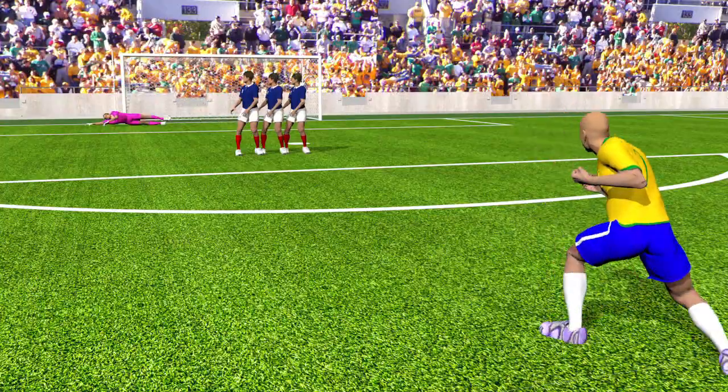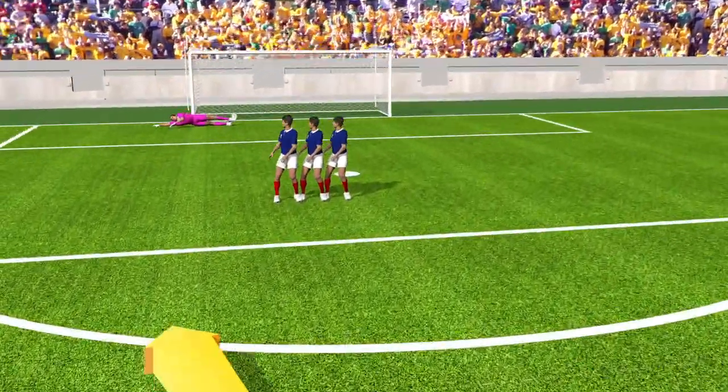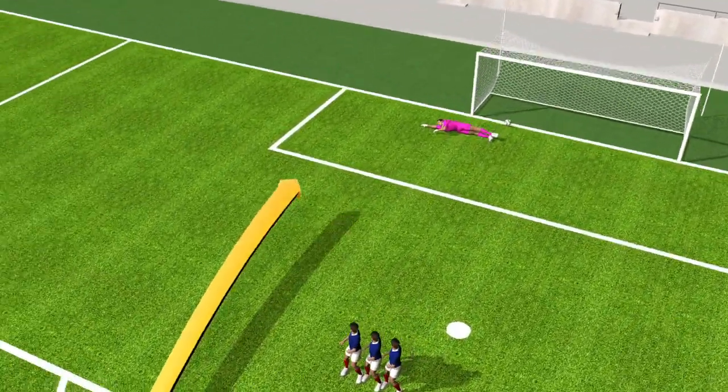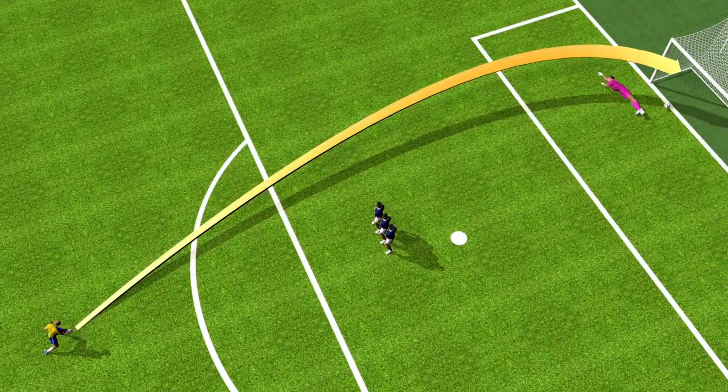When taking free kicks, footballers often try to curl the ball. The aerodynamics of the swerved shot makes the ball curve in an arc towards its target.